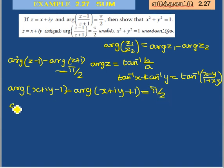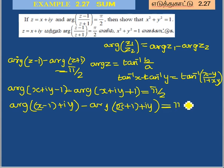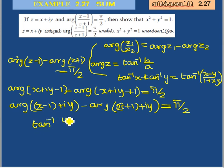The real part of (Z minus 1) is (X minus 1) and imaginary part is Y. The real part of (Z plus 1) is (X plus 1) and imaginary part is Y. Applying the argument formula: tan inverse of Y/(X minus 1) minus tan inverse of Y/(X plus 1) equals π/2.